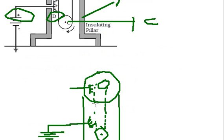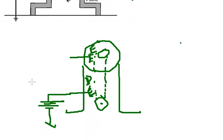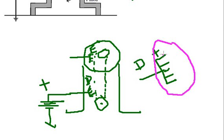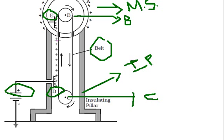Because of the high electric field near comb D, the air surrounding it gets ionized due to the action of points. Comb D has positive charge; it attracts negative charges from the ionized air towards itself and repels positive charges onto the belt. So positive charges move along with the belt upward.